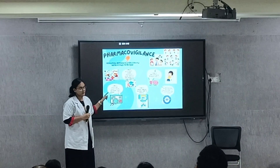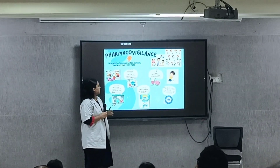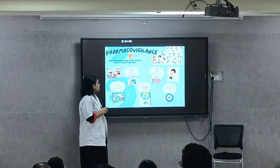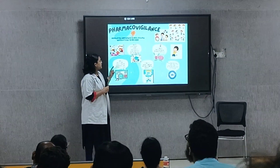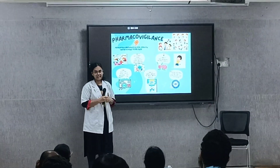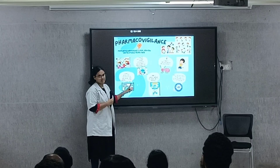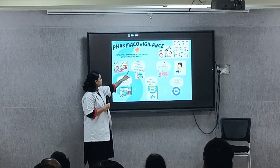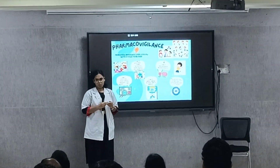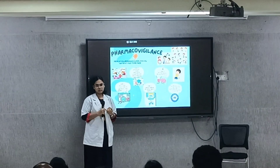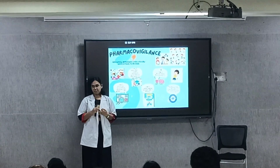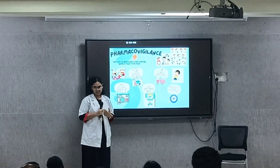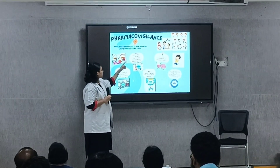The next stage is assessment, which consists of five steps. The first step is triage, which involves establishing the validity of ICSRs — individual case safety reports. Triage consists of four components: identifying the patient, the reporter, the suspected drug, and the adverse drug reactions.